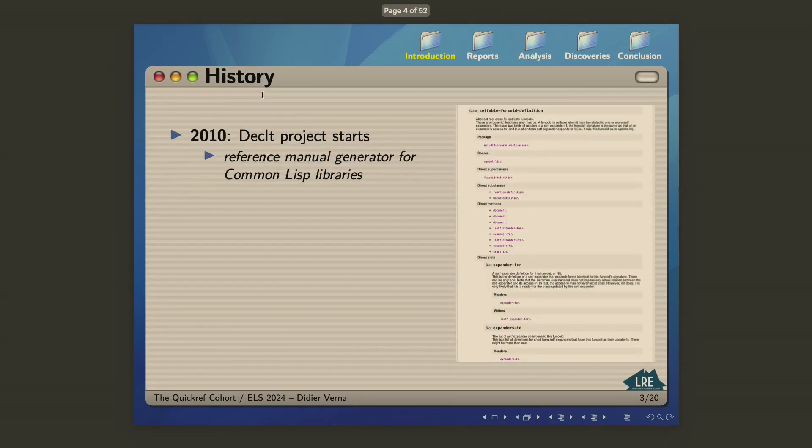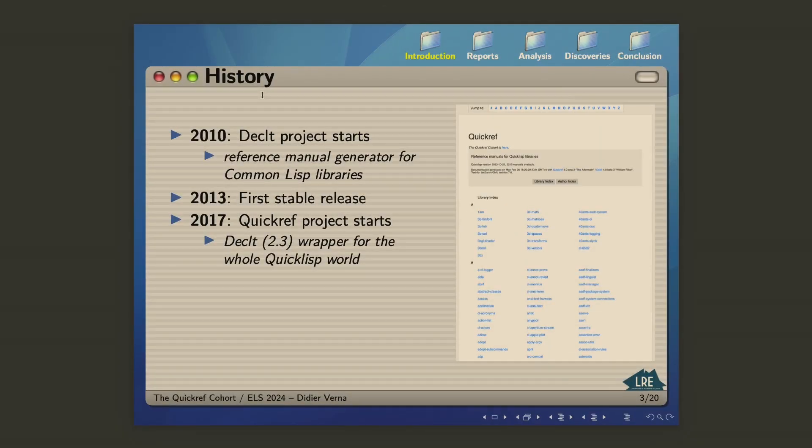A little bit of history first. The DECLET project, which is my reference manual generator for Common Lisp Library, started in 2010. At the time I was merely interested in generating reference manuals for my own libraries. The development went on for approximately three years, and then I issued the first stable release. This is the point at which it occurred to me that maybe it would be interesting to automatically generate reference manuals for libraries other than mine. And so this is how the QuickRef project started with the help of a former student of mine.